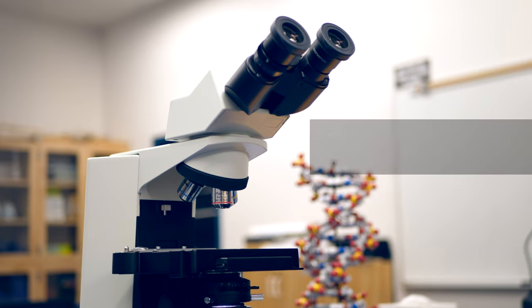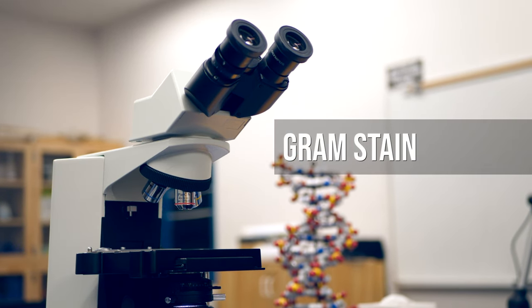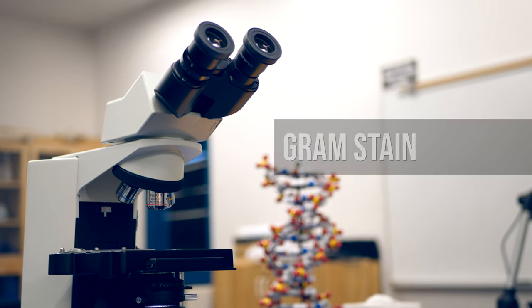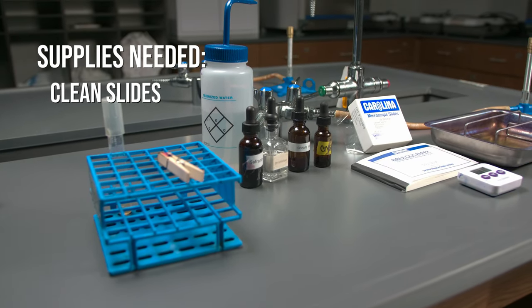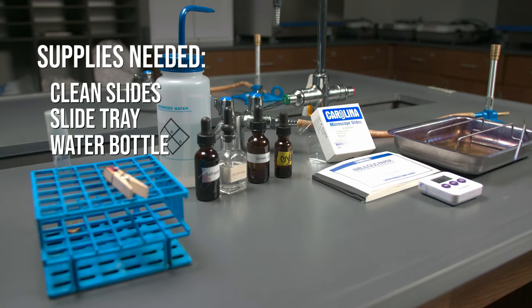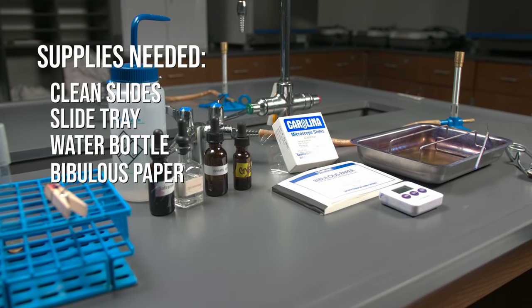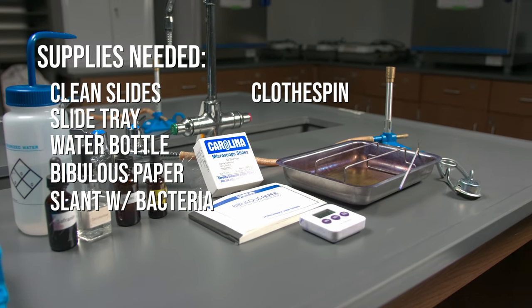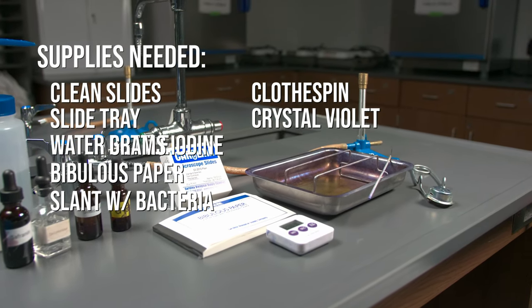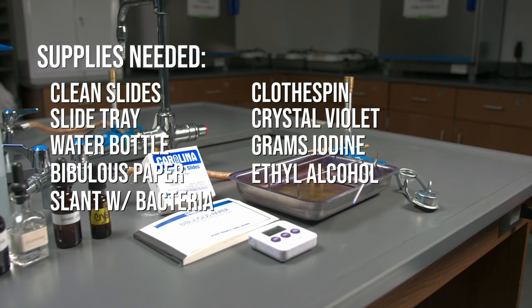In this video we will cover how to create a gram stain. The supplies you will need are clean slides, a slide tray, a water bottle, bibulous paper, a slant that contains bacteria, a clothespin, crystal violet, gram's iodine, ethyl alcohol, and safranin.